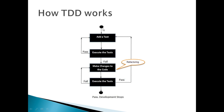Let's look at how TDD works. When you get a client requirement, you first write a test, then you execute it — but it will fail because you have not written any code yet. When the test fails, you start writing your actual code just to pass that test. If the test fails again, you write the code again until all tests pass. Once the test passes, meaning the function is doing what you wanted, you can start with a new test. That is how test driven development works.